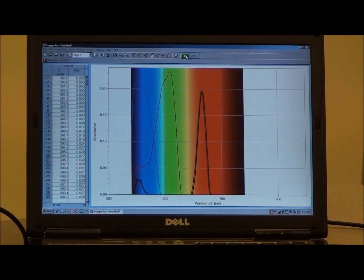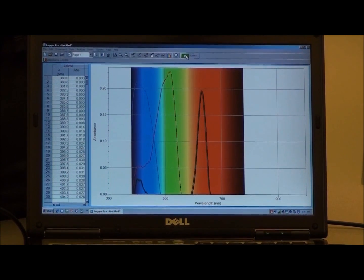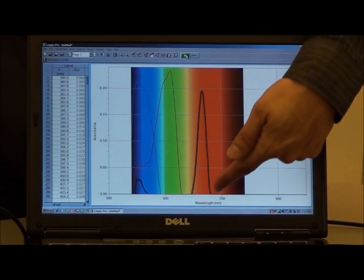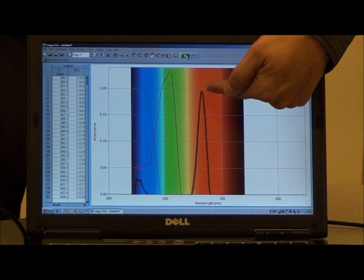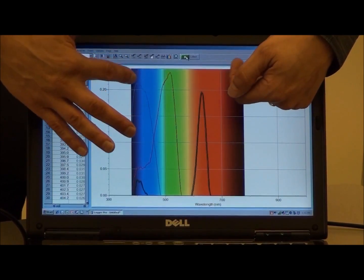For instance, if I wanted to measure a blue solution, I would choose a wavelength in the red region. Likewise if I wanted to measure a yellow solution, I would choose a wavelength in the blue or violet region.